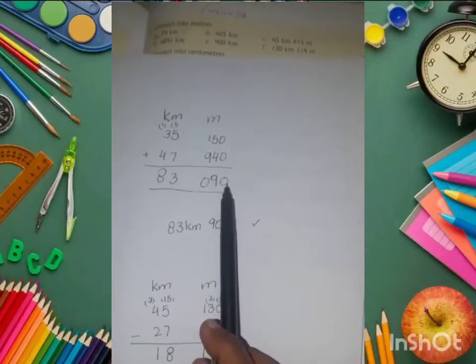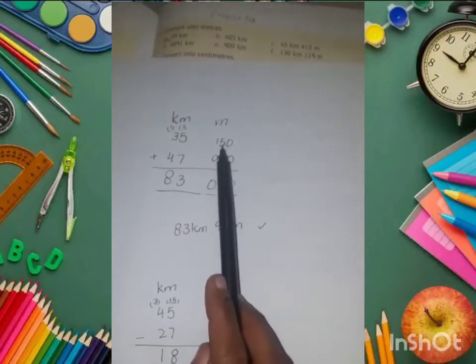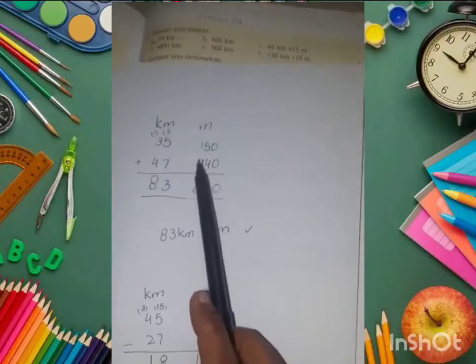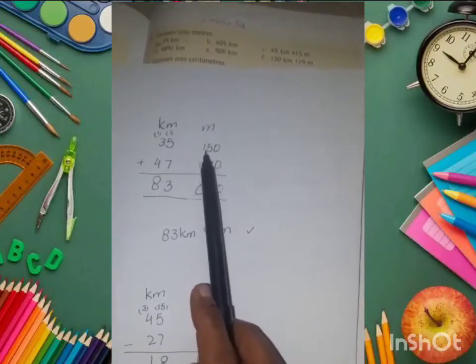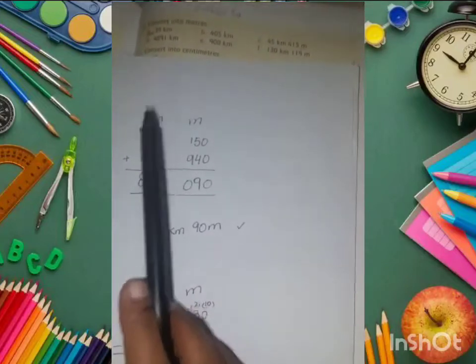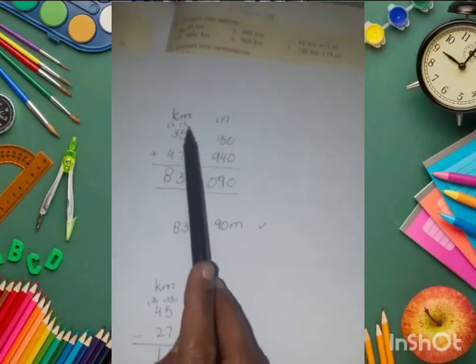We add: 0 plus 0 equals 0. 4 plus 5 equals 9. 9 plus 1 equals 10, so we write 0 and carry 1. We add 7 plus 5, which equals 12, plus 1 equals 13. We write 3 and carry 1.